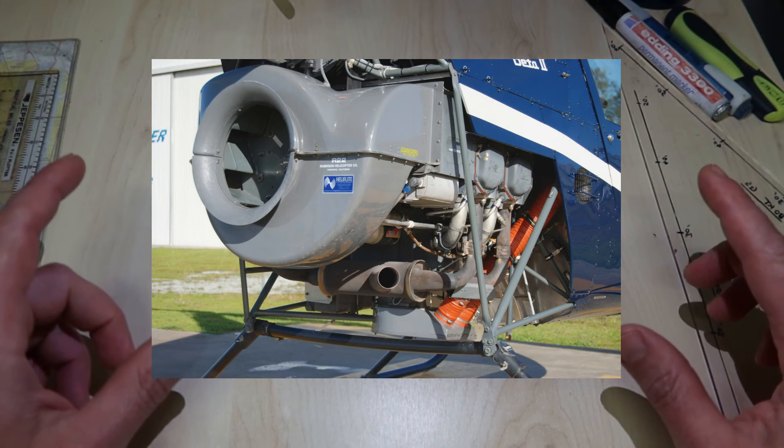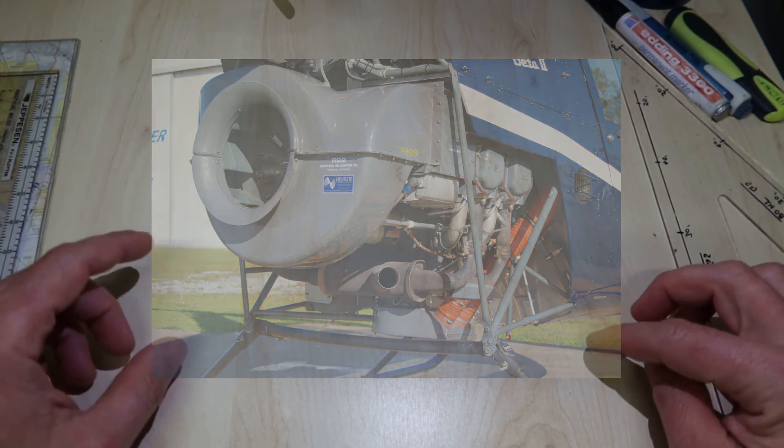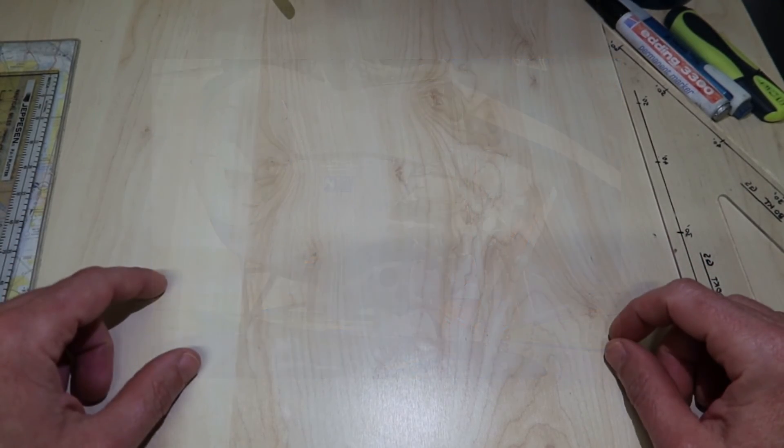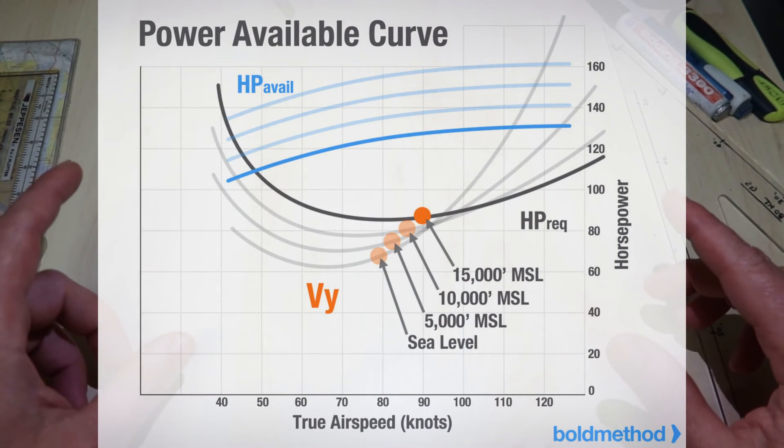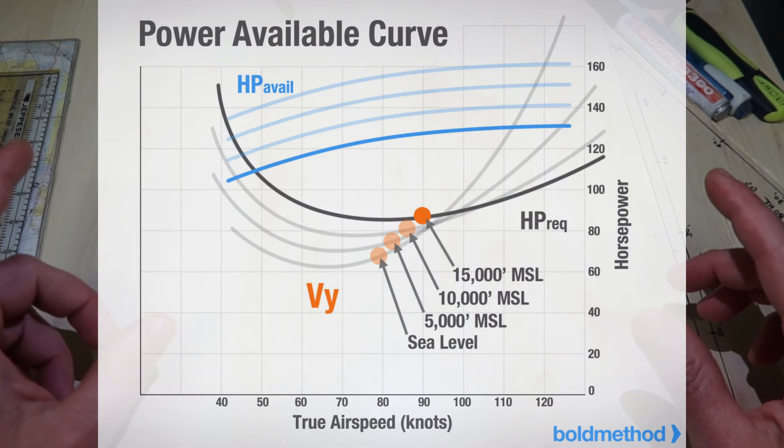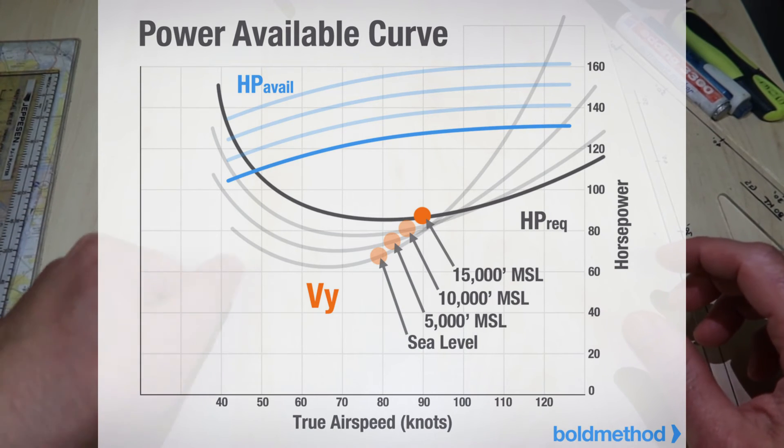On a normally aspirated piston engine, the mass of air entering the cylinder decreases with increasing density altitude. To maintain maximum continuous power as the aircraft climbs, the throttle through the collective lever must be progressively opened. Eventually, the point will be reached where the throttle cannot be opened any further, and from this point on, power output decreases.